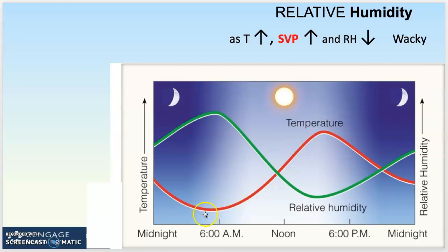Conversely — and this might blow your mind — the highest relative humidity of the day is at the lowest temperature, right at dawn. The lowest temperature of the day is right at dawn because Earth is radiating off so much energy and there is very little energy input before the sun starts to shine again. Because it's the lowest temperature, it's the lowest saturation vapor pressure, so that's really low in the denominator, meaning the quotient — relative humidity — is higher.